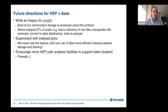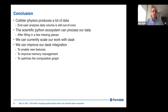In conclusion: collider physics produces a lot of data. The end-user analysis data volume is still large enough to be of interest to distributed systems. The scientific Python ecosystem can process our data after filling in some missing pieces, and we can scale our work with Dask. There are a lot of avenues for improvement that we're excited to work on and collaborate with the community on. That's all I have.